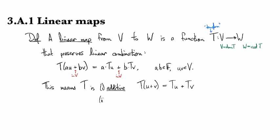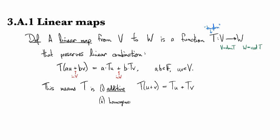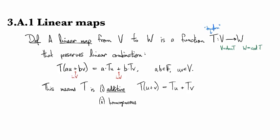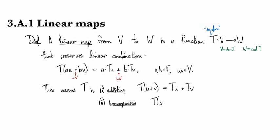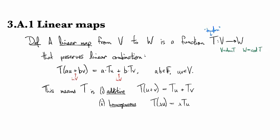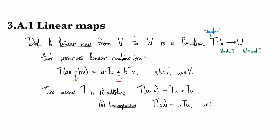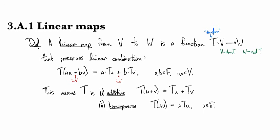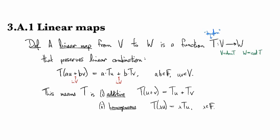It's also homogeneous. This means that you can scale. Those two properties together guarantee that you have a linear map.